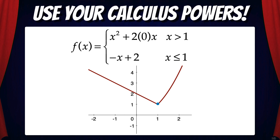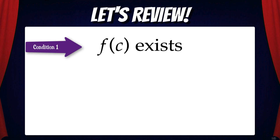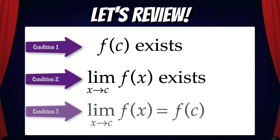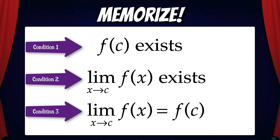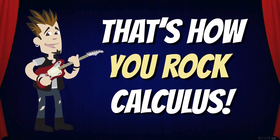Here's a picture of the piecewise function after plugging in the value of a — as you can see, the function is now continuous at x equals 1. To review: a function must satisfy three conditions to be continuous at a point x equals c. Condition 1: f(c) exists. Condition 2: the limit of f(x) as x approaches c exists. Condition 3: the limit of f(x) as x approaches c equals f(c). Make sure you memorize and truly understand these three conditions. I encourage you to check out my continuity song — memorizing a concept is always tremendously easier when music is involved. And that's how you rock calculus!